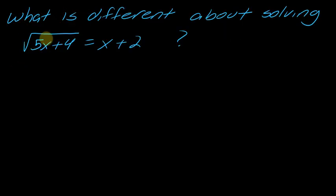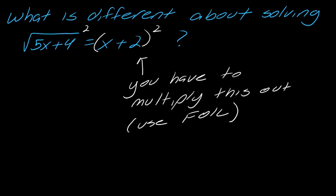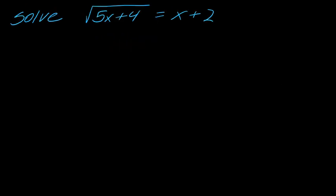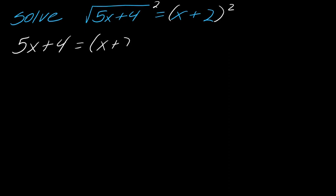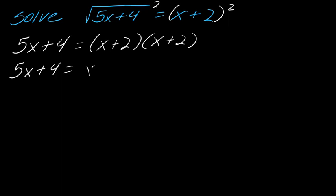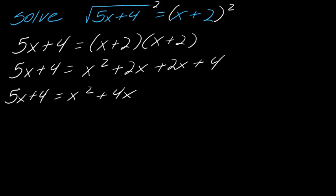Now I want to change this to the square root of 5x plus 4 equals x plus 2. What's different here? When I square it, the right side is not going to become x squared plus 4 — this actually requires me to foil. So squaring both sides gives 5x plus 4 equals x plus 2 times x plus 2. Let me work that out: x times x is x squared, x times 2 is 2x, 2 times x is 2x, and 2 times 2 is 4. Collecting like terms: 5x plus 4 equals x squared plus 4x plus 4.